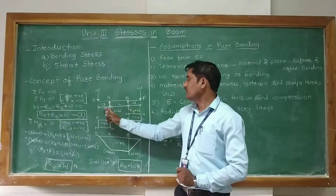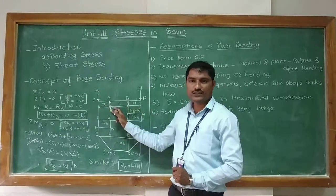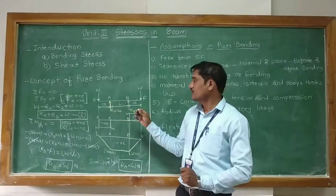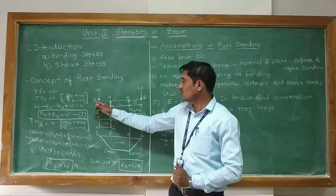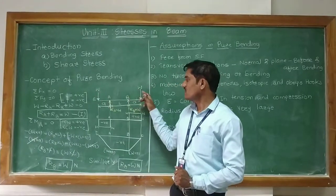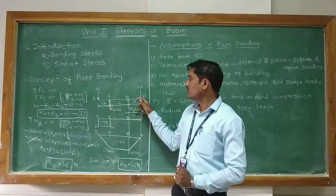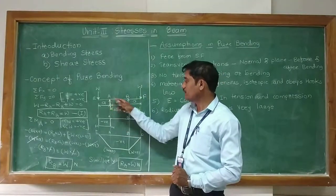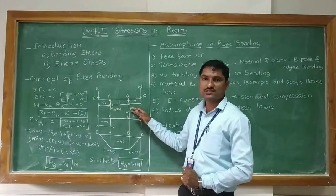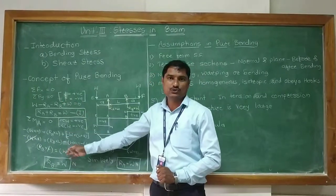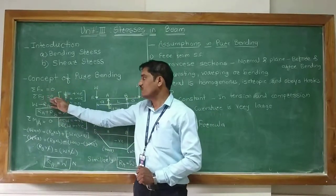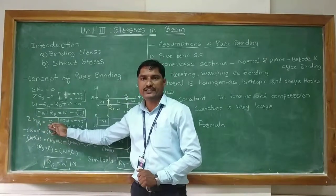We will first draw the free body diagram of this loading and then calculate the shear force and bending moment. The loads acting on points E and F are capital W. To maintain equilibrium, we apply support reactions at points A and B. To calculate these support reactions, we use the equilibrium equations: summation of Fx equals 0, summation of Fy equals 0, and summation of moments about point A equals 0.